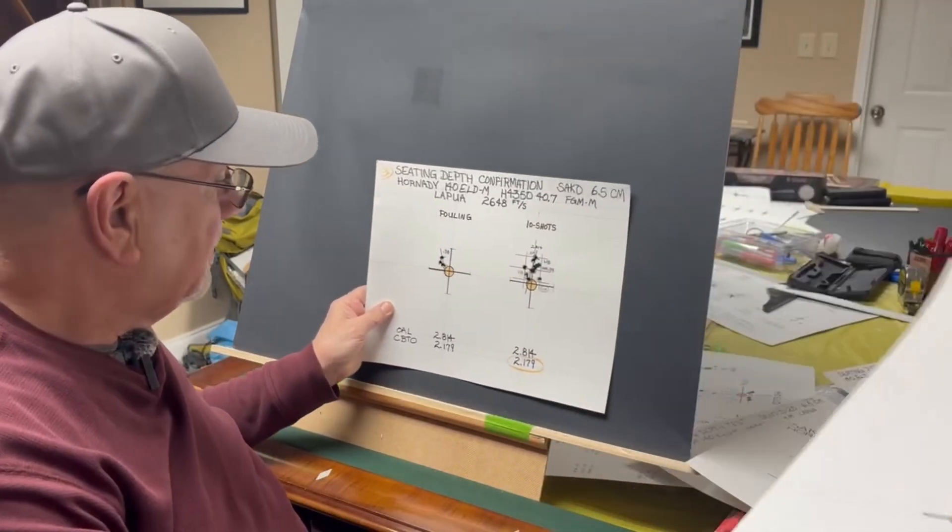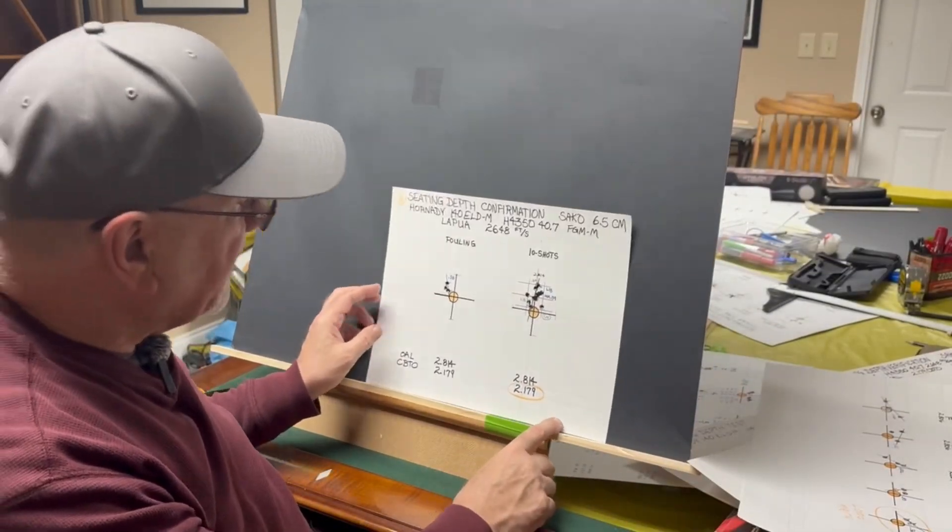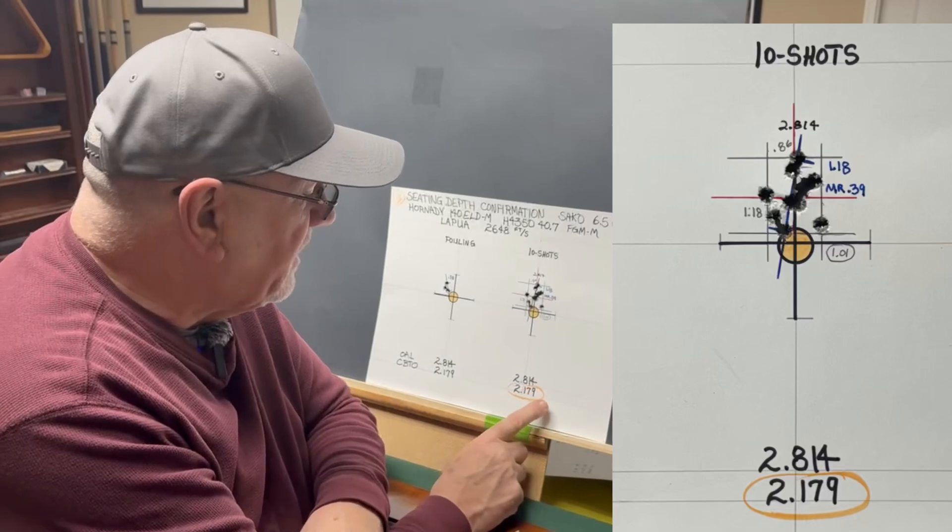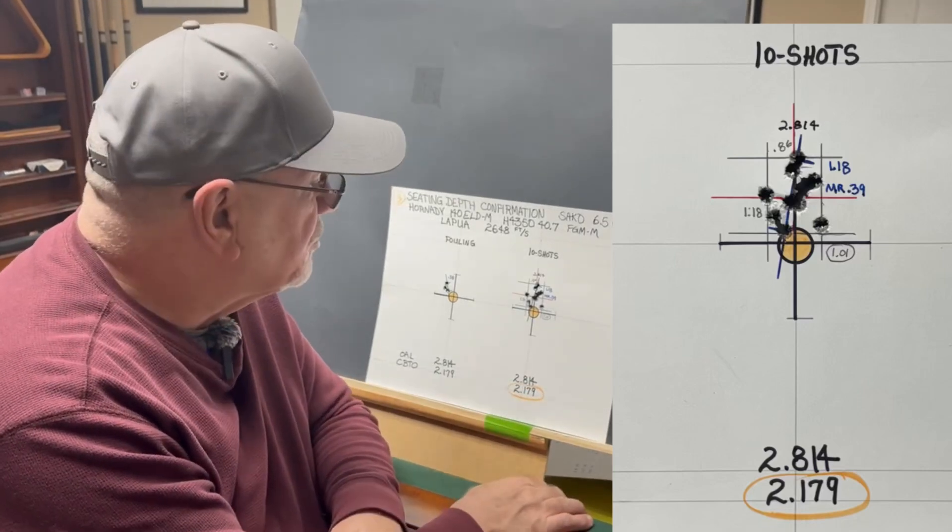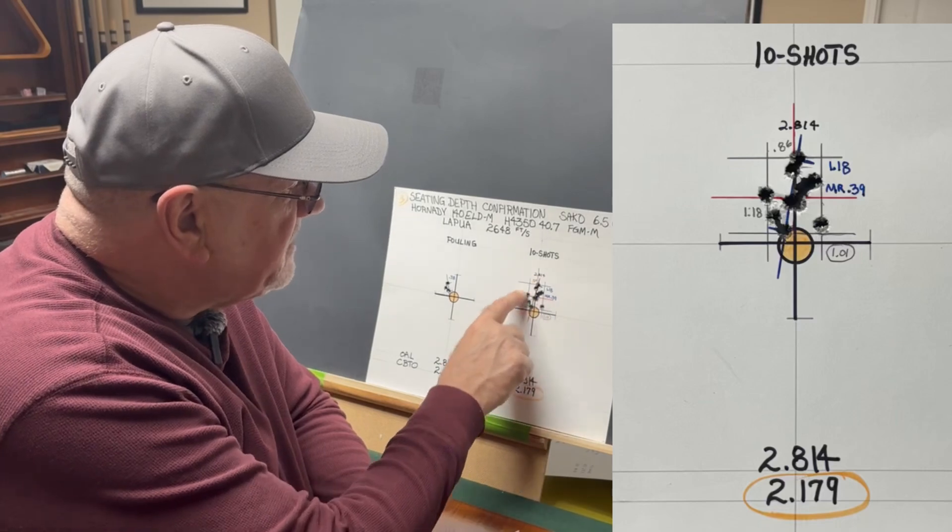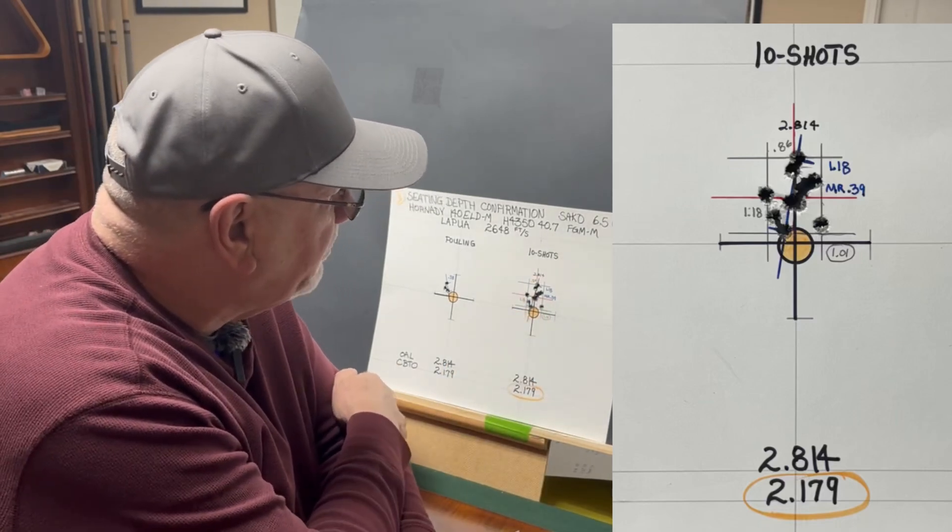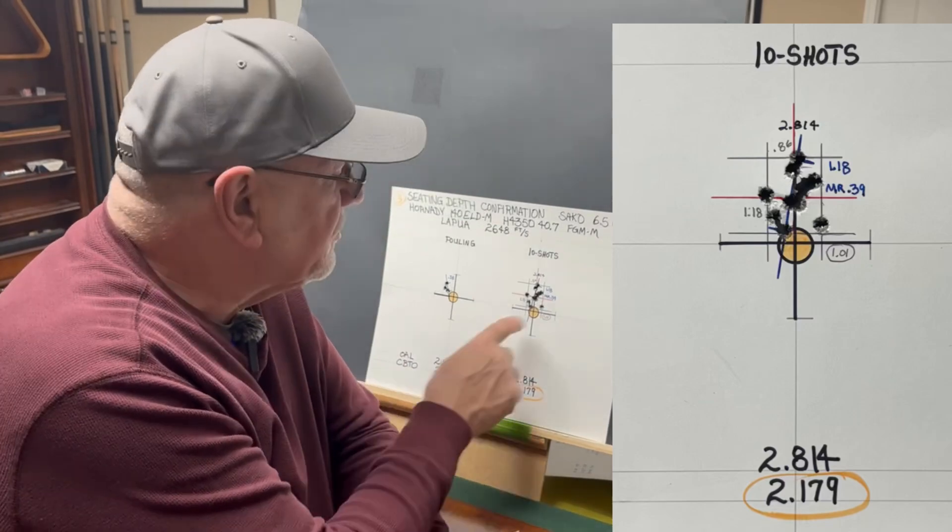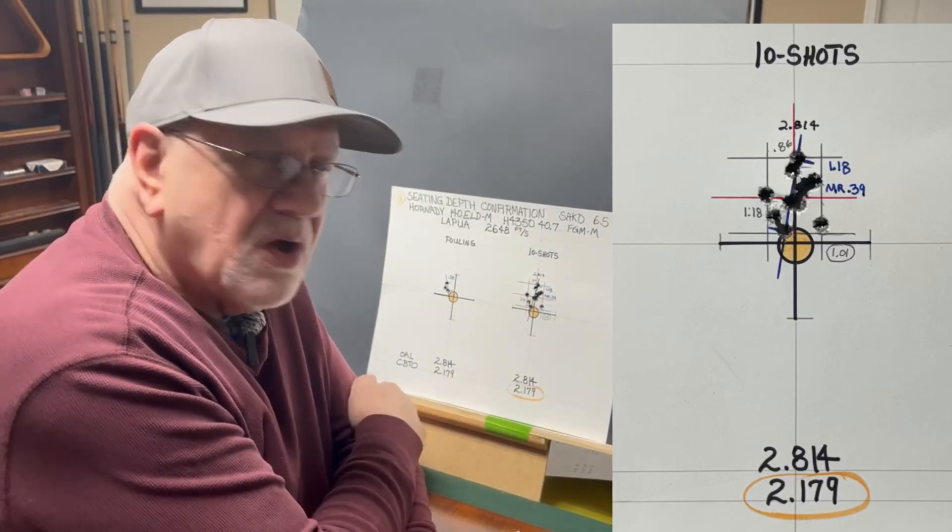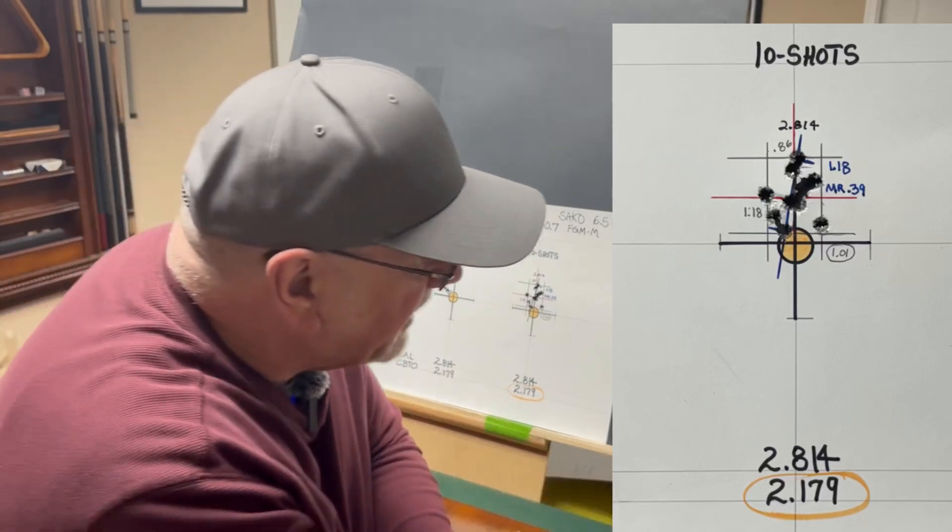So I went back and I loaded some additional rounds but this time I loaded at 2.814 and these were at 2.179 cartridge-based to ogive. I shot these 10 shots which were a little better. We had a 1.18 extreme spread and a 0.39 mean radius. So, I decided to do one other thing.